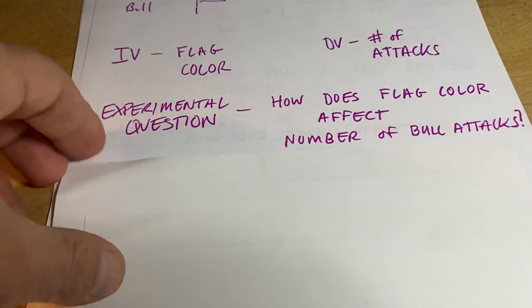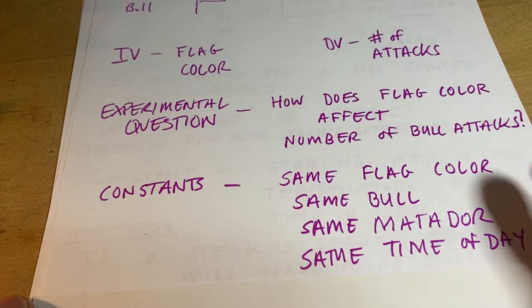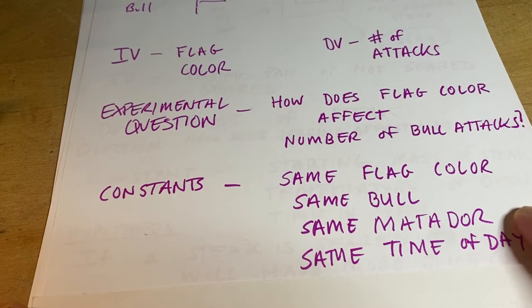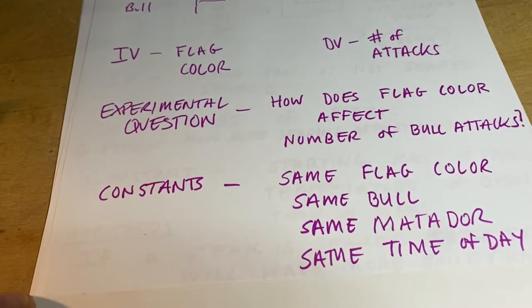Obviously, a bunch of things have to be kept constant. You could list any number of these, but basically: same flag color, same bull, same matador, same time of day.